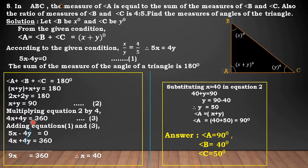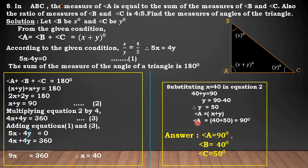Multiplying equation 2 by 4, we get 4X plus 4Y is equal to 360 degrees — number this equation as 3. Adding equations 1 and 3, plus 4Y and minus 4Y get cancelled, and we get 9X is equal to 360. Therefore, X is equal to 40. Substituting X equals 40 in equation 2, we get 40 plus Y is equal to 90. Therefore, Y is equal to 90 minus 40, which equals 50. Angle A is equal to X plus Y, so angle A is equal to 40 plus 50, which equals 90 degrees. Answer: angle A is 90 degrees, angle B is 40 degrees, and angle C is 50 degrees.